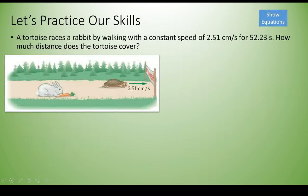We're going to go ahead and apply that to a problem. A tortoise races by a rabbit walking with a constant speed of 2.51 centimeters per second for 52.23 seconds. How much distance does the tortoise cover?